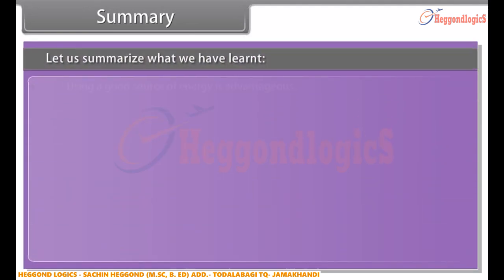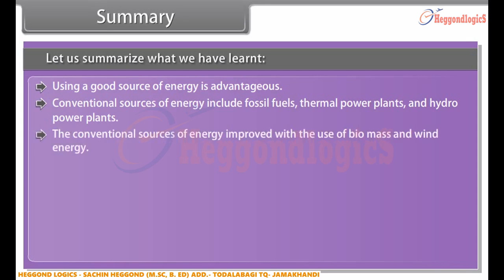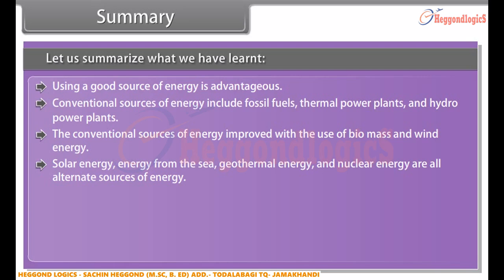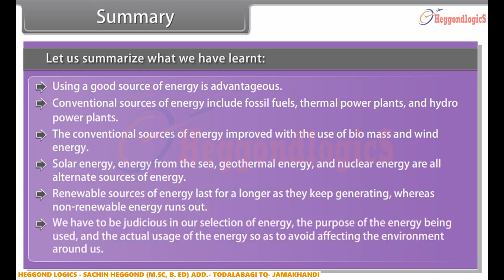Summary. Let us summarize what we have learnt. Using a good source of energy is advantageous. Conventional sources of energy include fossil fuels, thermal power plants, and hydropower plants. The conventional sources of energy are improved with the use of biomass and wind energy. Solar energy, energy from the sea, geothermal energy, and nuclear energy are all alternate sources of energy. Renewable sources of energy last for as long as they keep generating, whereas non-renewable energy runs out. We have to be judicious in our selection of energy so as to avoid affecting the environment around us.